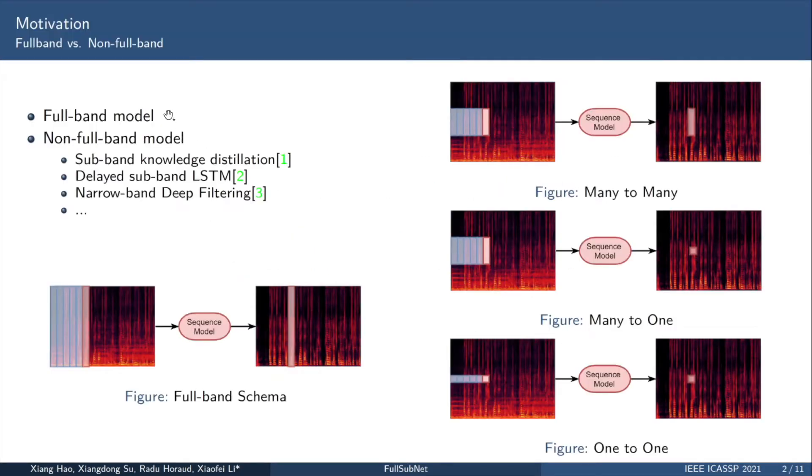Previous works mainly talk about full-band model, full-band feature mapping. In the lower left corner, we show the processing mode of the full-band model. For a full-band model, input a frame and a historical frame within a certain range and output an enhanced speech frame.